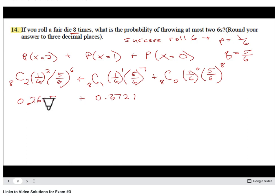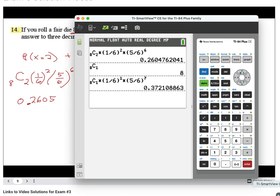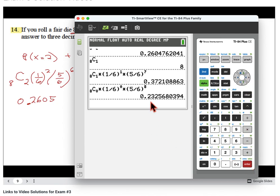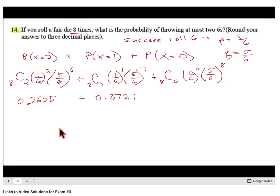And then finally this last one. Let's go up, get this, enter, and then change our values. Let's say choose zero, six to the zero power. We're going to round that five up to a six: 0.2326.